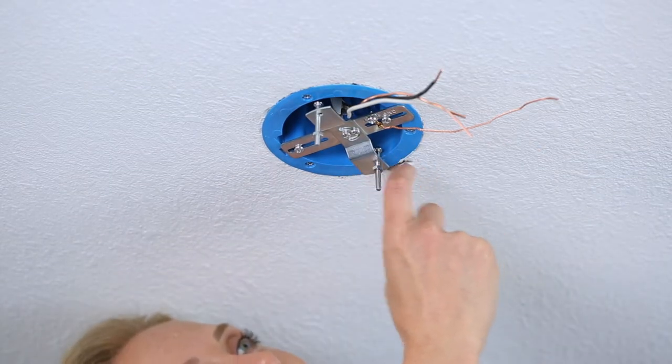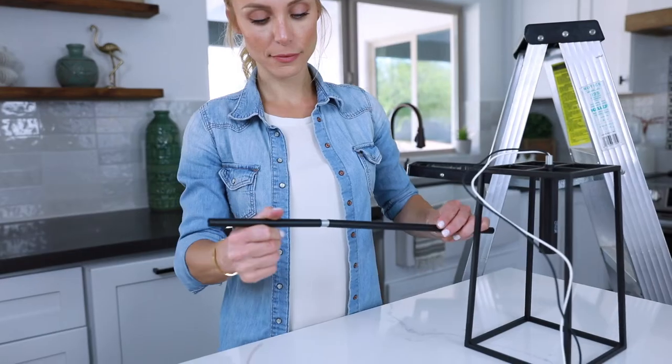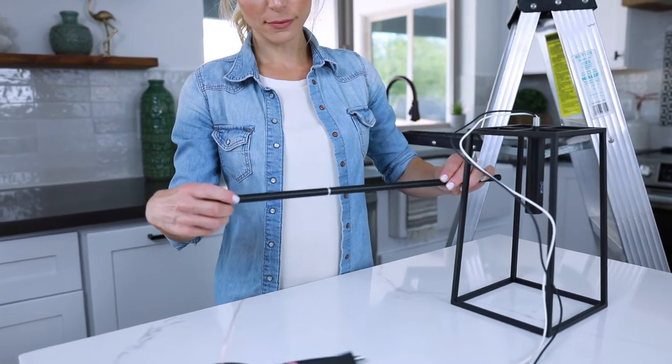Adjust studs to the correct length for your canopy and lock in place with a hex nut. Assemble fixture using appropriate rods for your desired installation height.